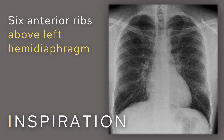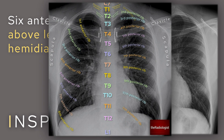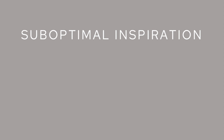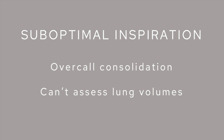Moving on to I for inspiration. The way I do it is to look for six anterior ribs above the left hemidiaphragm. The posterior ribs are the ones you can see more clearly and are more horizontal; the anterior ribs are more vertical. Count one to six anterior ribs and make sure you can see those above the hemidiaphragm. If you can, you have adequate inspiration. With suboptimal inspiration, the lung vessels will be crowded together and appear brighter, so you may over-call an opacity. It can also be difficult to distinguish poor inspiration from the patient genuinely having reduced lung volumes.